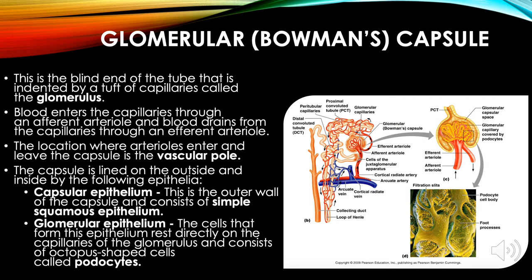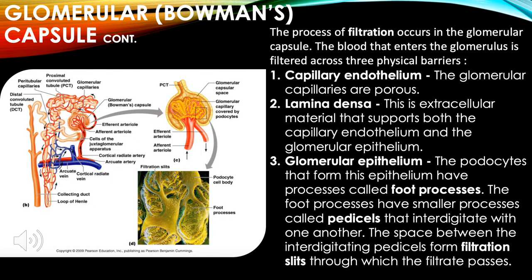The capsule is lined by two types of epithelia: capsular epithelium — the outer wall of the capsule consisting of simple squamous epithelium — and glomerular epithelium — cells that form the epithelium resting directly on the capillaries of the glomerulus, consisting of octopus-shaped cells called podocytes.